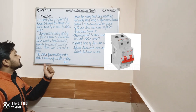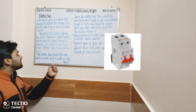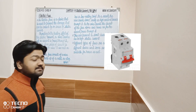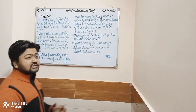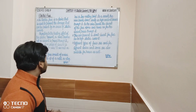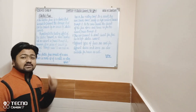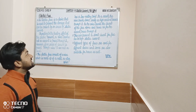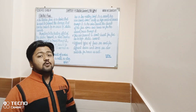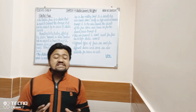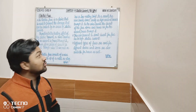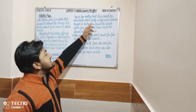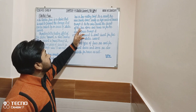The electric fuse consists of a wire which is made up of a metal or alloy that has a low melting point. As a result, the wire breaks down easily when a high current passes through it.